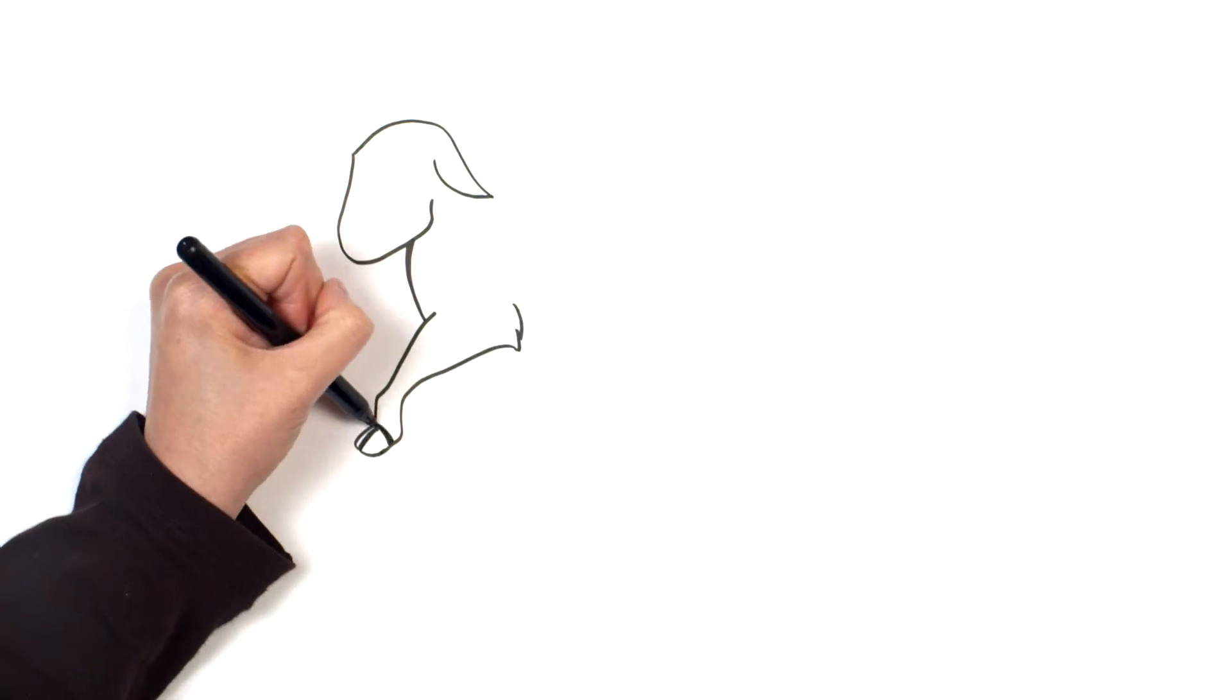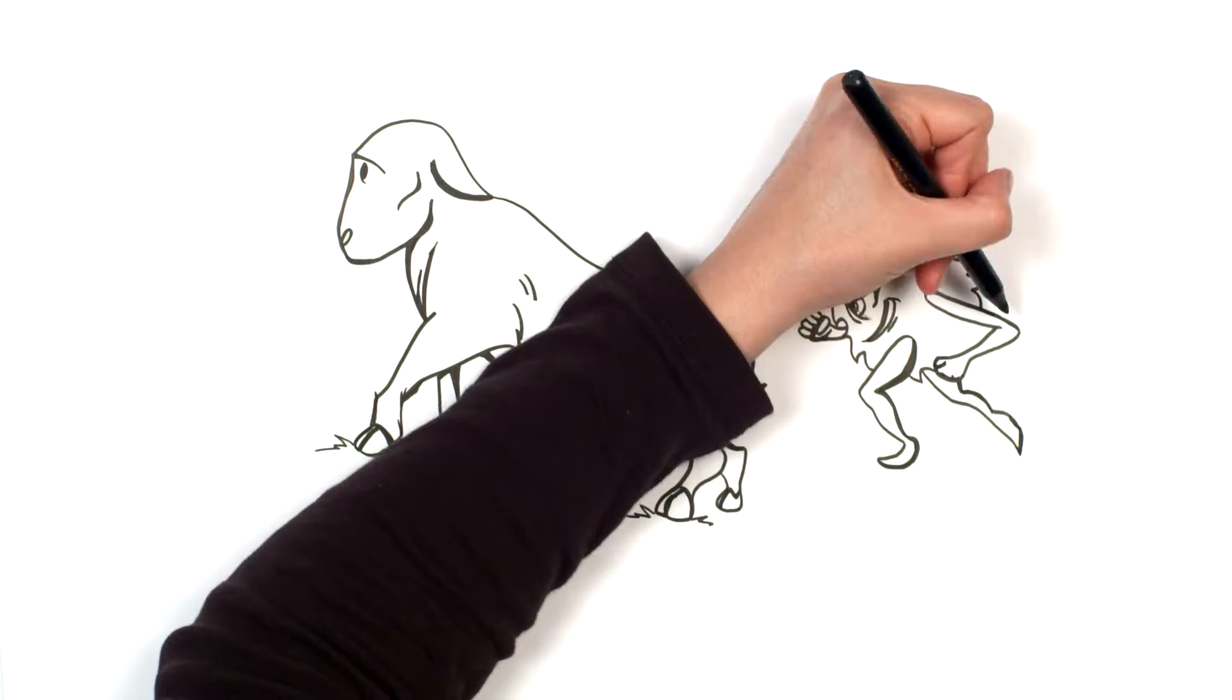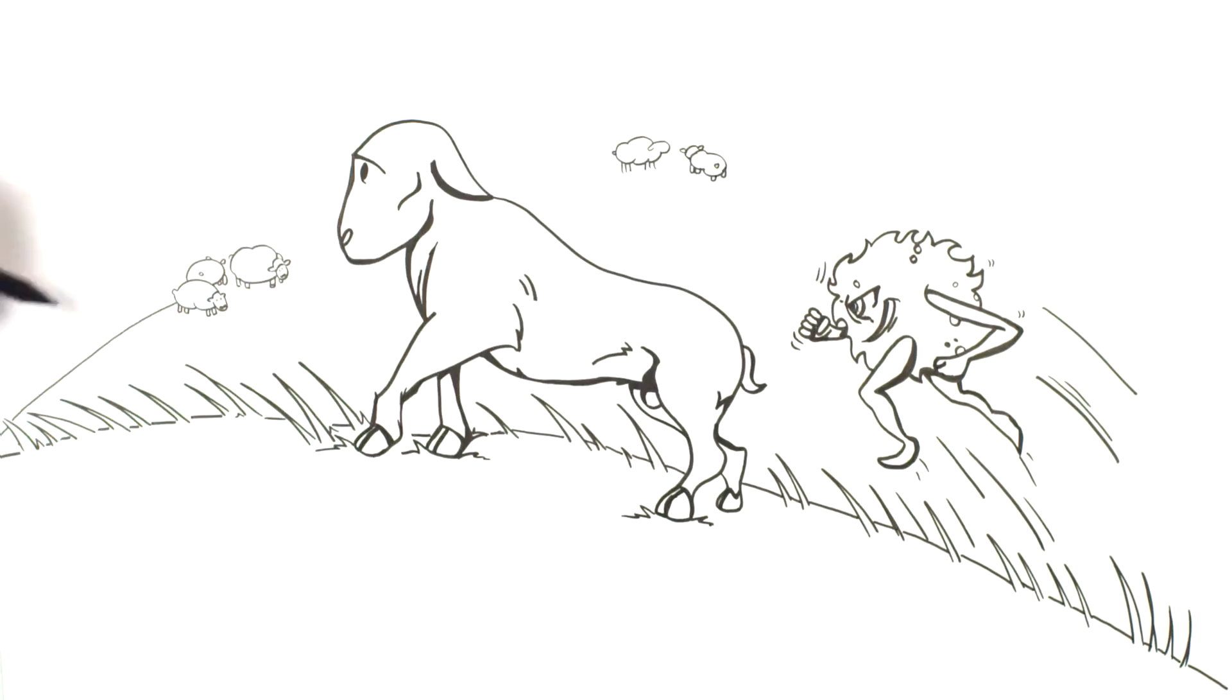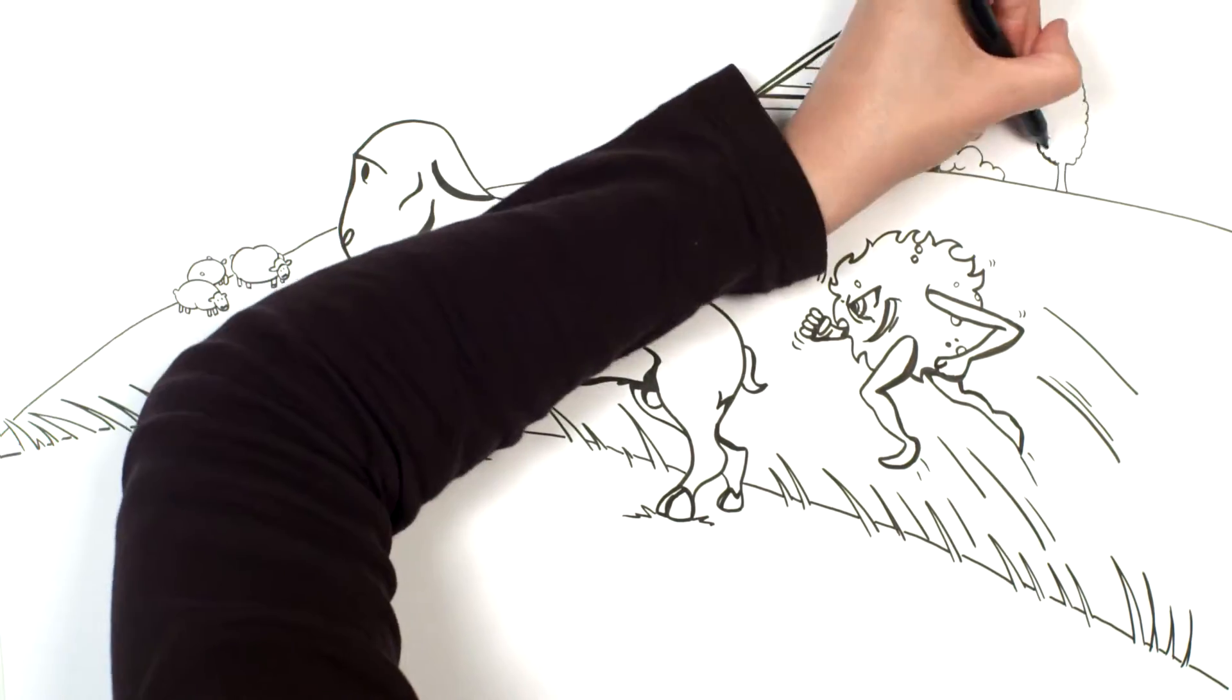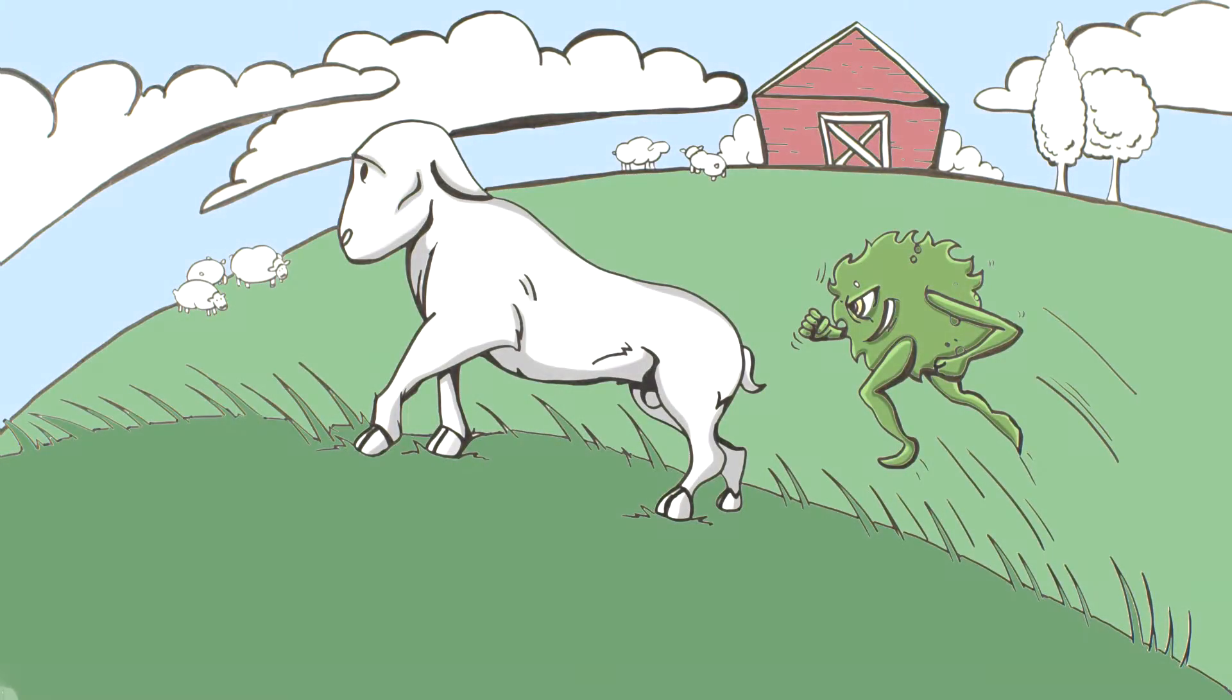And remember that ram I bought? Well, he spread MAP all through the pasture. Apparently, MAP can survive outside on pasture for more than one year.